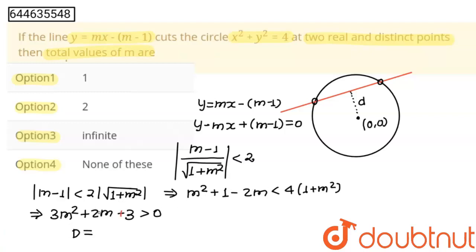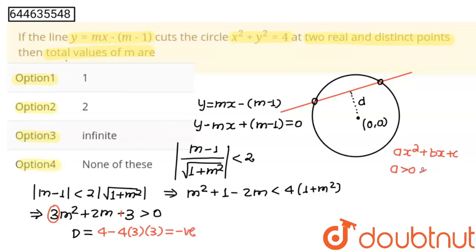Now I am going to find the discriminant D. D = b² - 4ac = (2)² - 4 × 3 × 3 = 4 - 36, which is negative. Since a = 3 is positive and D is negative, in any quadratic ax² + bx + c, if a is positive and D is negative, then the quadratic expression is always positive.